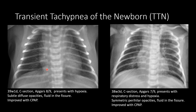Sometimes there's blunting of the costophrenic angles, which can be pleural effusions, and at times you may see some mild cardiomegaly. You normally have increased lung volumes — that is one difference between respiratory distress syndrome and transient tachypnea of the newborn, but often that's a hard distinction to make. These are both cases of transient tachypnea of the newborn, both late preterm infants born with cesarean section, with pretty good Apgars who had some hypoxia or respiratory distress. Both were treated with CPAP and both improved without long-term complications.